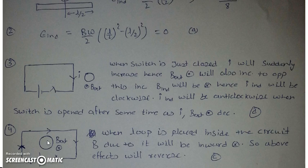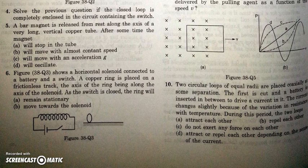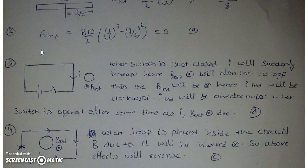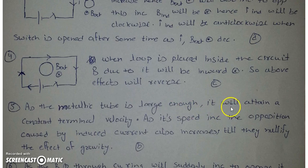In the next question, a bar magnet is released from rest along the axis of a very long vertical copper tube. As the magnet falls due to gravity its velocity gradually increases, so the rate of induction increases and the opposition also increases. Since the metallic tube is long enough, the magnet will eventually attain a terminal constant velocity, when the opposition caused by the induced current nullifies the effect of gravity.